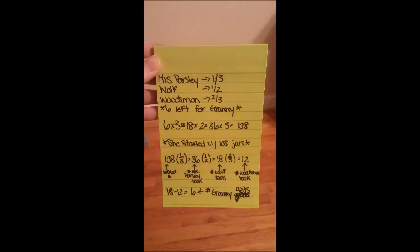I got the three from Mrs. Parsley's one third, the two from the one half of the Wolf, and the three again from the Woodsman's two thirds, which means she started with one hundred and eight jars.